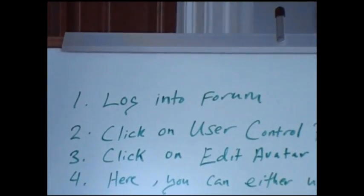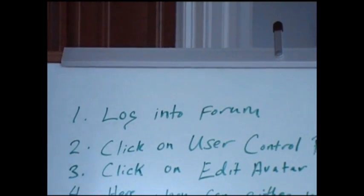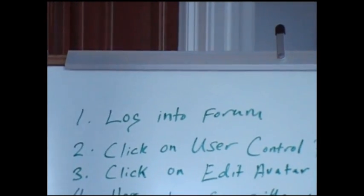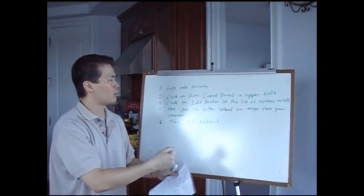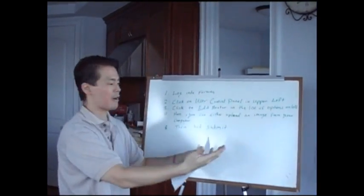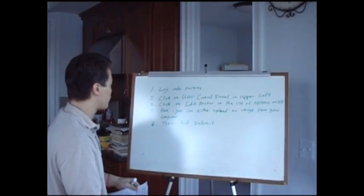One, you're going to log into the forum. So if you go to affiliate article writers, there's going to be the forum button at the top. I keep my username and password saved so I never have to put it in. So if you keep yours saved, then just click forum and you'll automatically log into the forum.